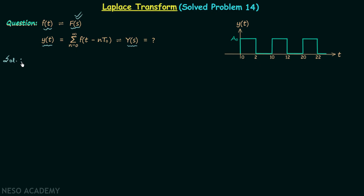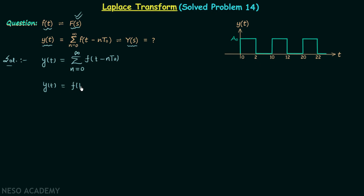So let's see how we can calculate Y(s) in terms of F(s). The signal y(t) is equal to the summation from n equal to 0 to infinity of f(t minus n·t₀). Looking at the right hand side, it is clear that y(t) is equal to a sum of infinite number of terms, and to find our solution we will write down 3 or 4 initial terms. When n equals 0 the first term is f(t), when n equals 1 the second term is f(t minus t₀), similarly we have f(t minus 2t₀), and so on.